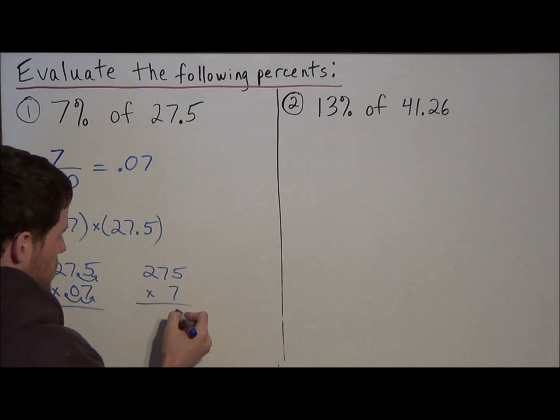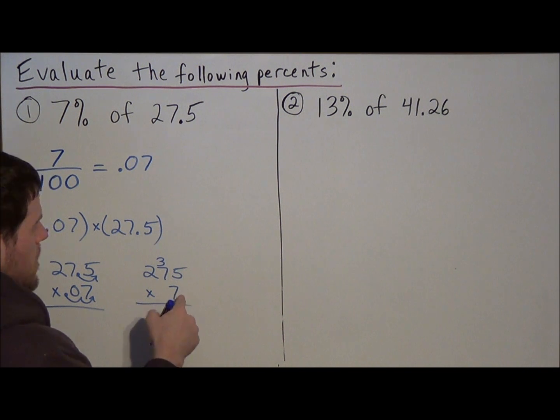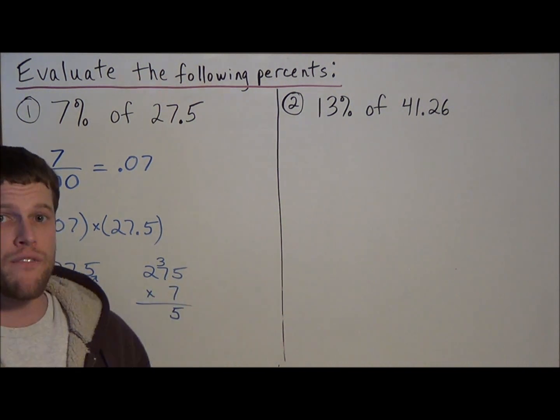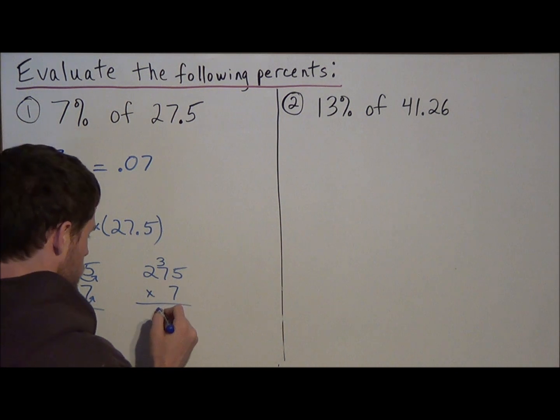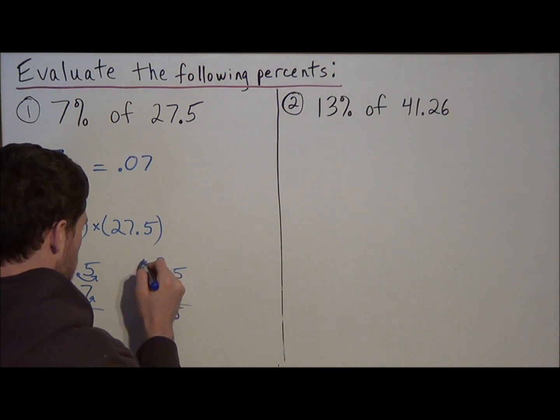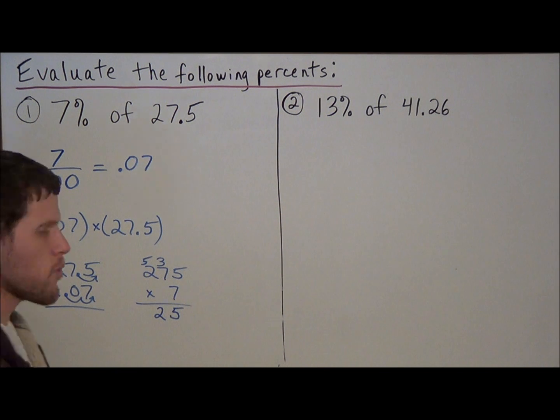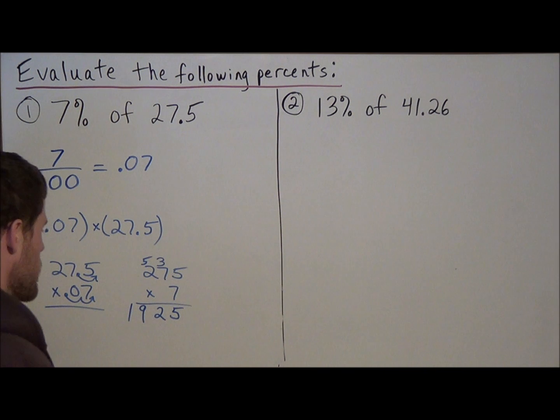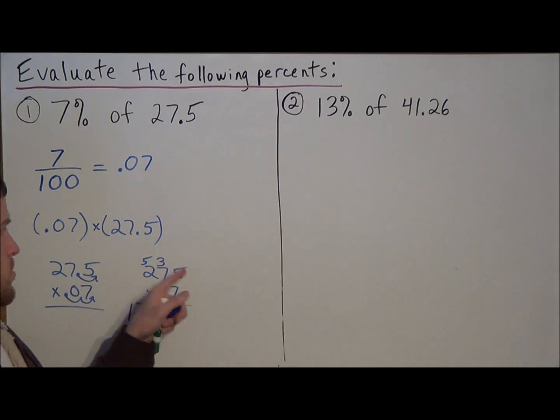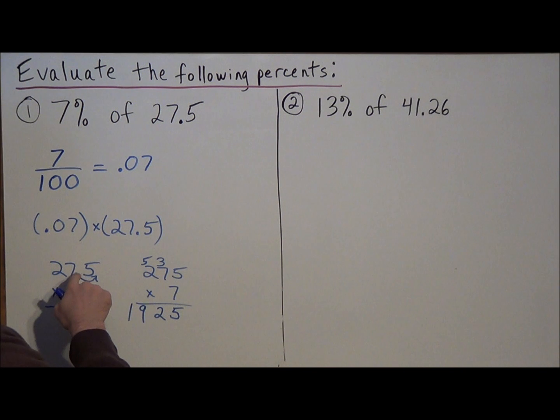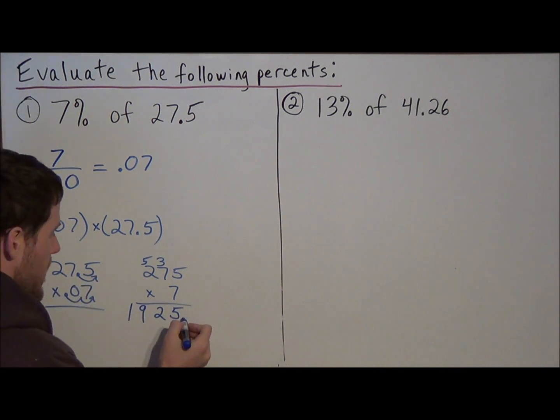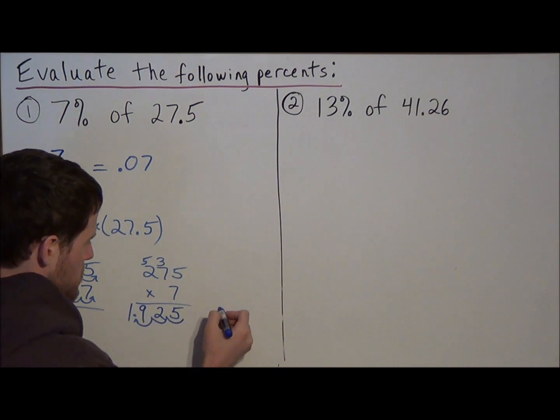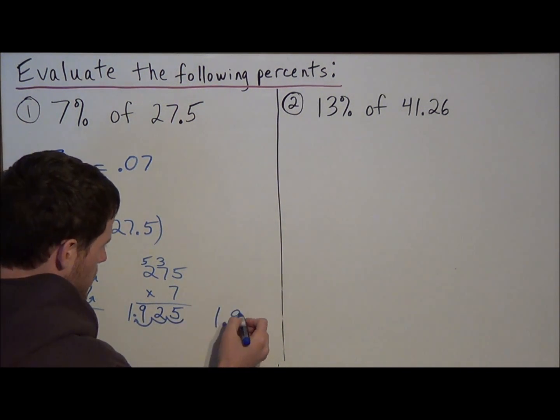So now we're doing 7 times 5 is 35. We write our 5, we carry a 3 from the 35. Then we have 7 times 7 is 49, 49 plus 3 is 52. We carry the 5 from the 52, and then we have 7 times 2 is 14, 14 plus 5 is 19. So remember what we said before, to transform this multiplication problem into a problem with whole numbers, we jumped a total of three spaces to the right. So now we take the decimal and we go up three spaces to the left, which tells us that our answer to the first problem is 1.925.